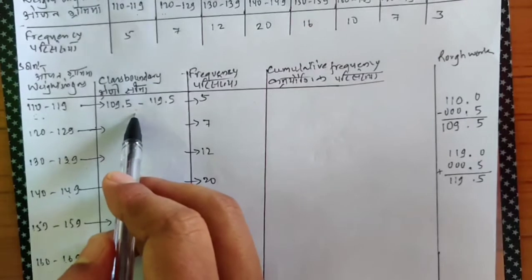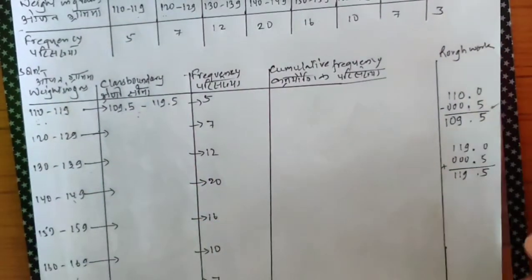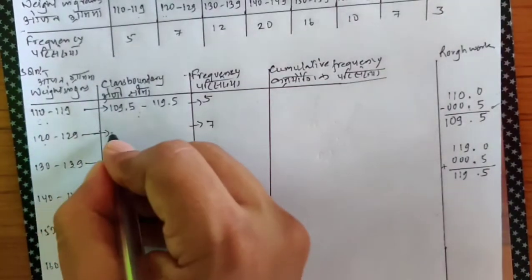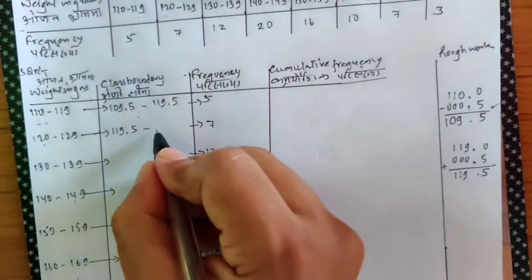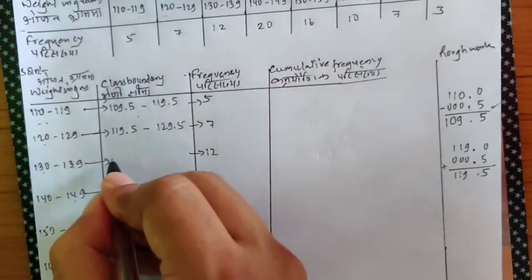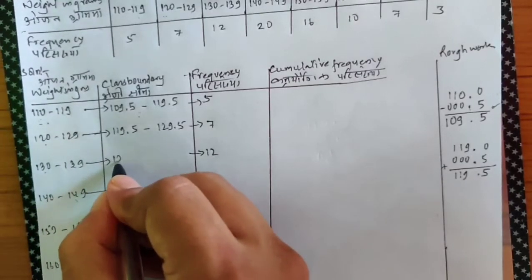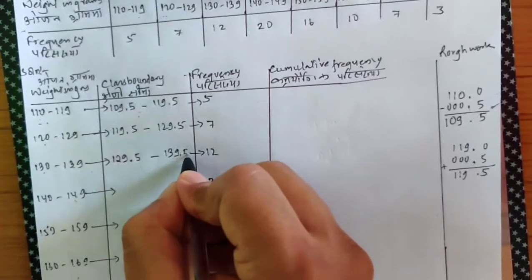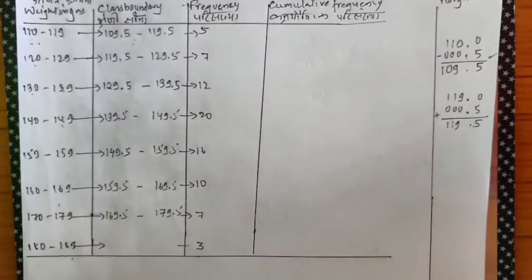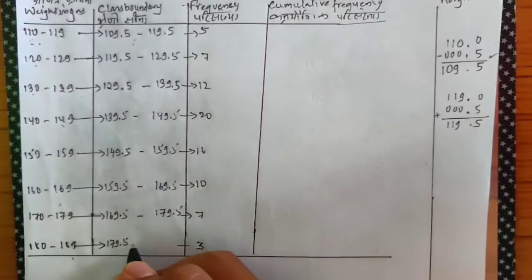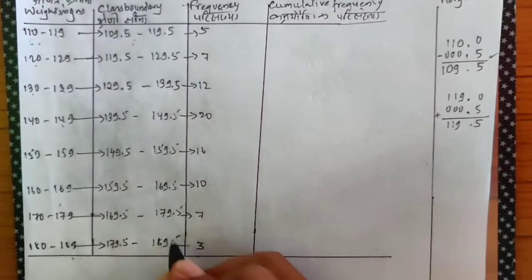You don't need to show the rough work if you use your logic. 120 — what's before 120? It's 119, so this will be 119.5. And 129 will become 129.5. What will 130 become? What is before 130? 129 — so 130 becomes 129.5, and 139 becomes 139.5. Fill up everything. The last one: 180 becomes 179.5, and 189 becomes 189.5.